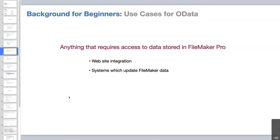Use cases for OData — Vince asked me to talk about this and I'll be honest: I'm probably not the best person to evangelize all the possibilities, as I'm more interested in the intricacies of how you perform the calls. A very obvious use case is having a website that needs to integrate with your FileMaker data. But really anything that requires access to data stored in FileMaker — whether it needs to push in a periodic update or read and publish data somewhere else — OData is definitely a contender.